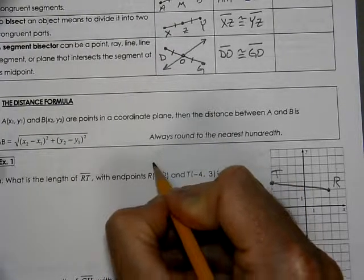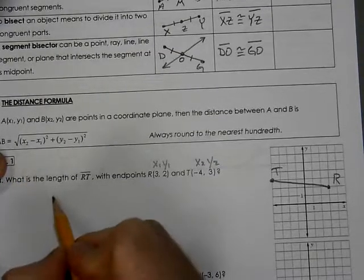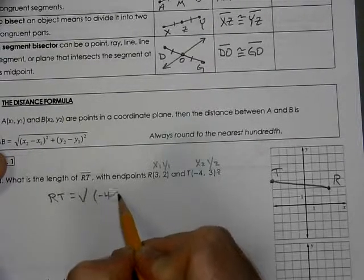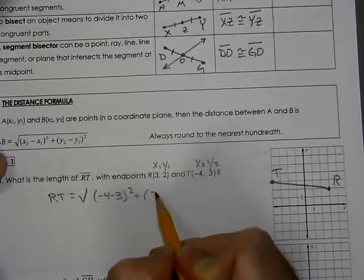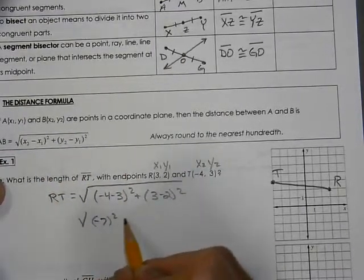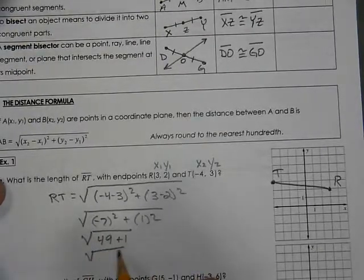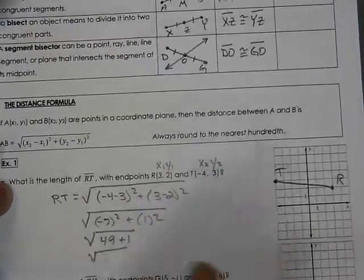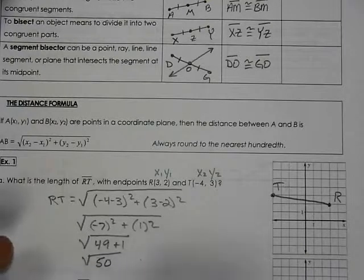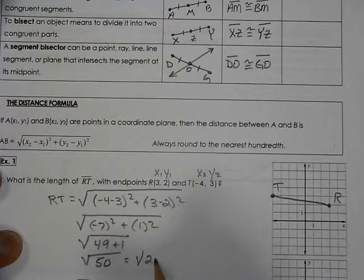We're going to look at this as X1 and Y1, and X2 and Y2. Now we'll use our formula. RT is the value of negative 4 minus 3 squared and 3 minus 2 squared. That's using the formula. Negative 7 squared and 1 squared. That's 49 plus 1, which is the square root of 50.